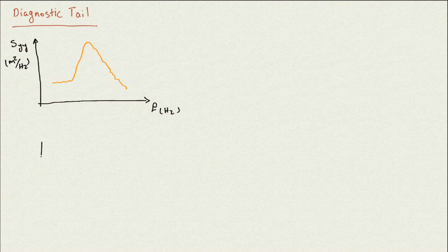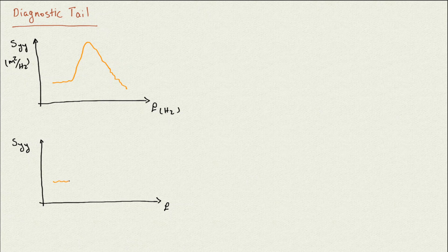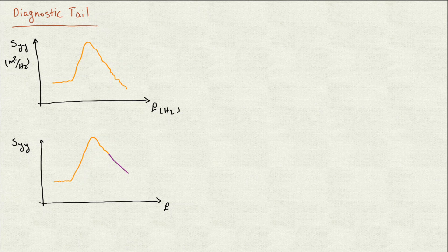Let me draw that again. Here is the frequency on the x-axis and the spectrum on the y-axis. Assume we have data up to some point, but we don't have the rest of the spectrum. In one of the most common scenarios, we go ahead and replace that missing part of the data with one of the available empirical power spectra. This replacement is called the diagnostic tail.